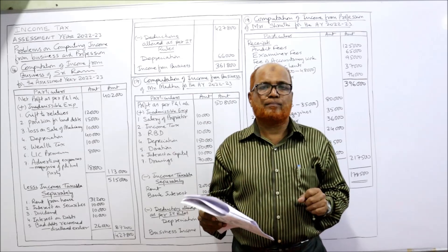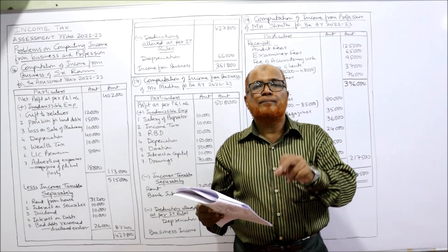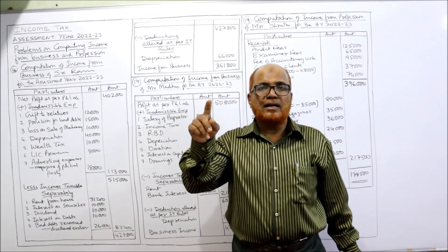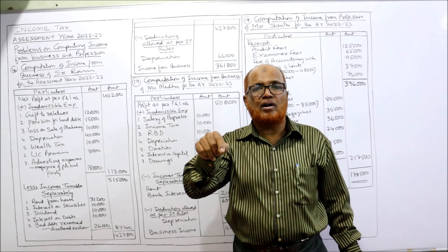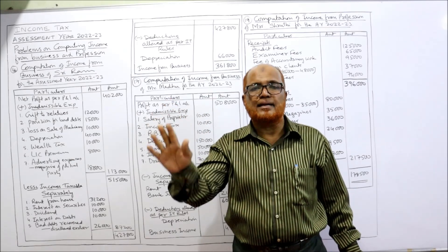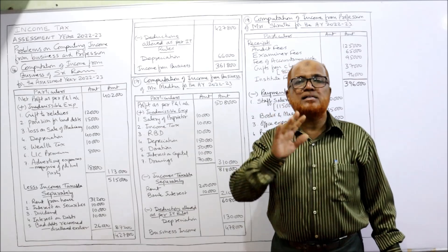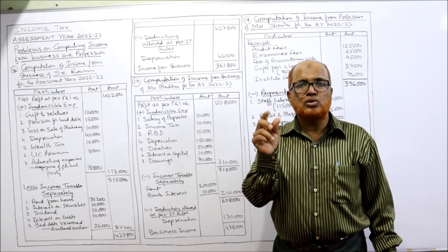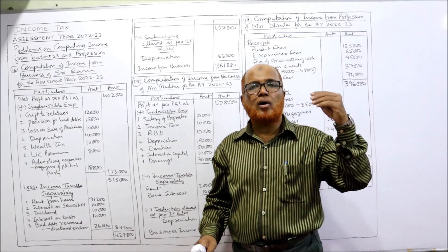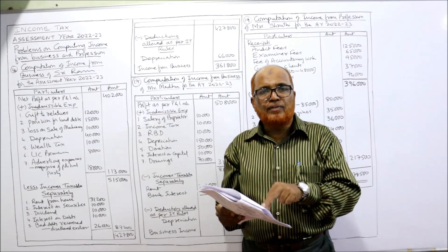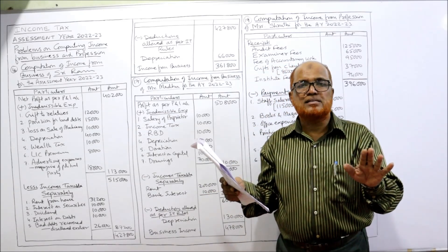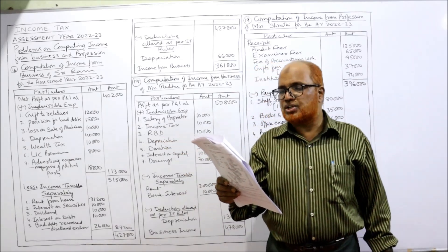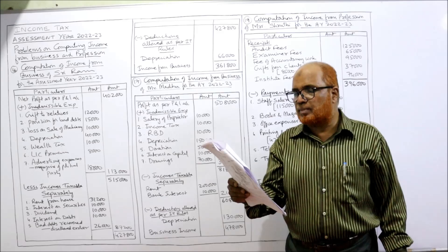Bad debts recovered are shown on the credit side of the profit and loss account, and the adjustment states that these bad debts were disallowed earlier. If bad debts are disallowed earlier and are now recovered, it is not taxable. If they were allowed as bad debts earlier, now it is business income. Always check whether bad debts were allowed or disallowed — if disallowed, it is not a taxable income.